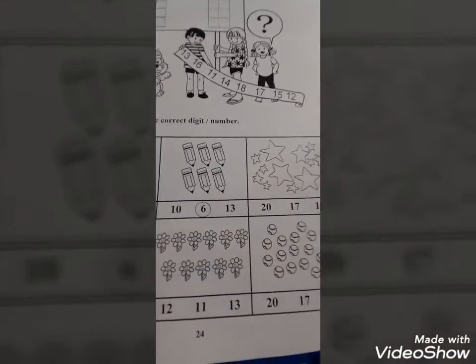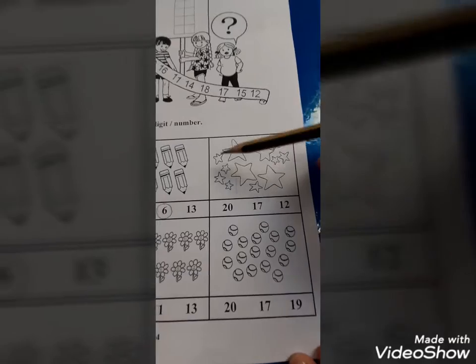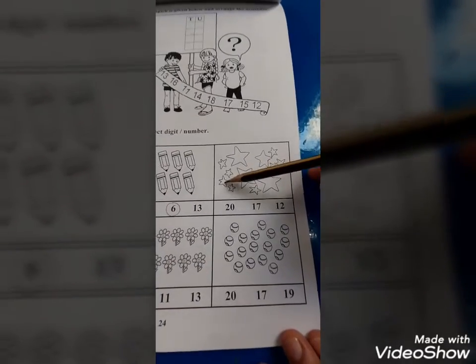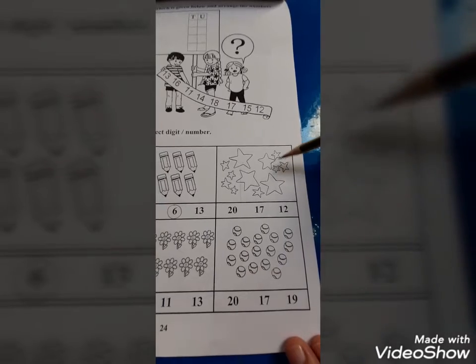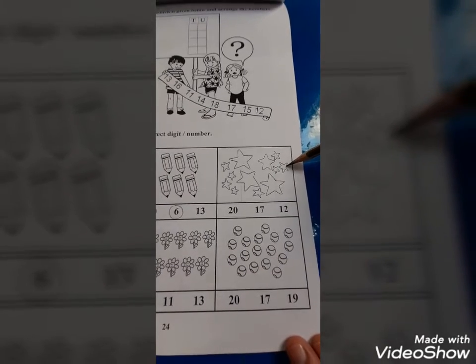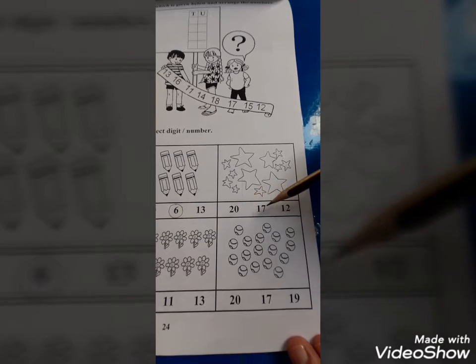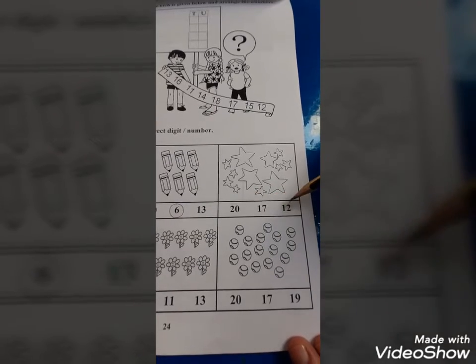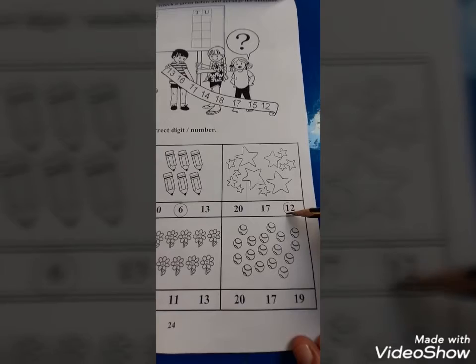Now the next object is stars. Come with me: 1, 2, 3, 4, 5, 6, 7, 8, 9, 10, 11, 12. Here, 12. So find out where is the correct digit: 20, 17, 12. Where is 12? Yes, this is 12. Circle this.